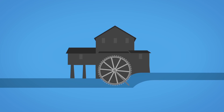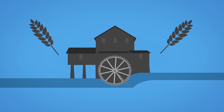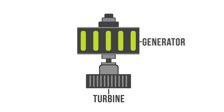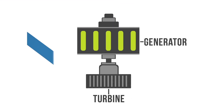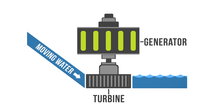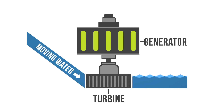One of the first uses of hydroenergy was for mechanical milling, such as grinding grains. But today, modern hydro plants produce electricity using turbines and generators. The mechanical energy created by moving water spins rotors on a turbine. This turbine is connected to an electromagnetic generator, which produces electricity when the turbine spins.